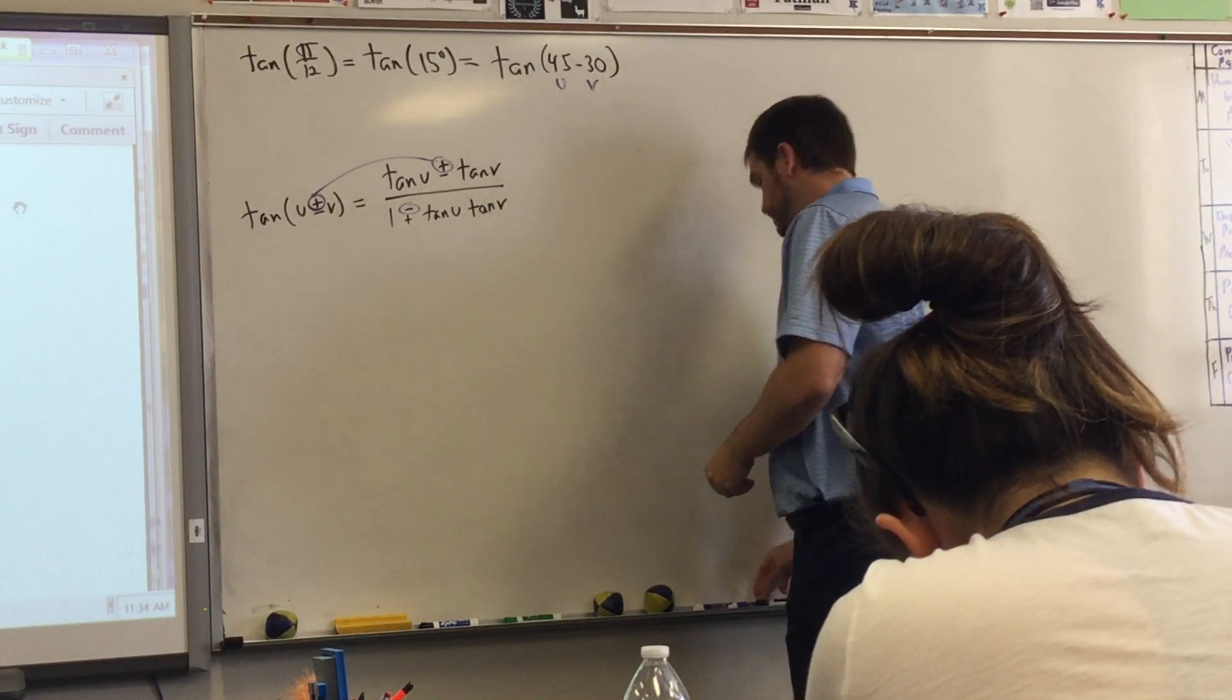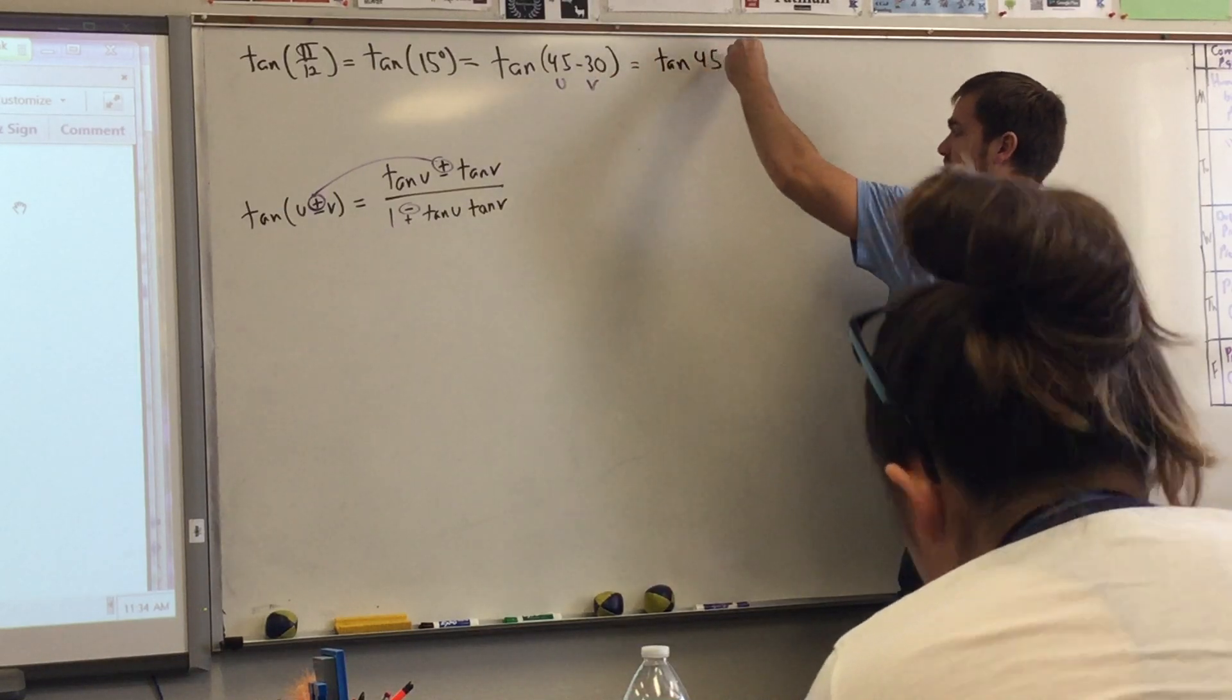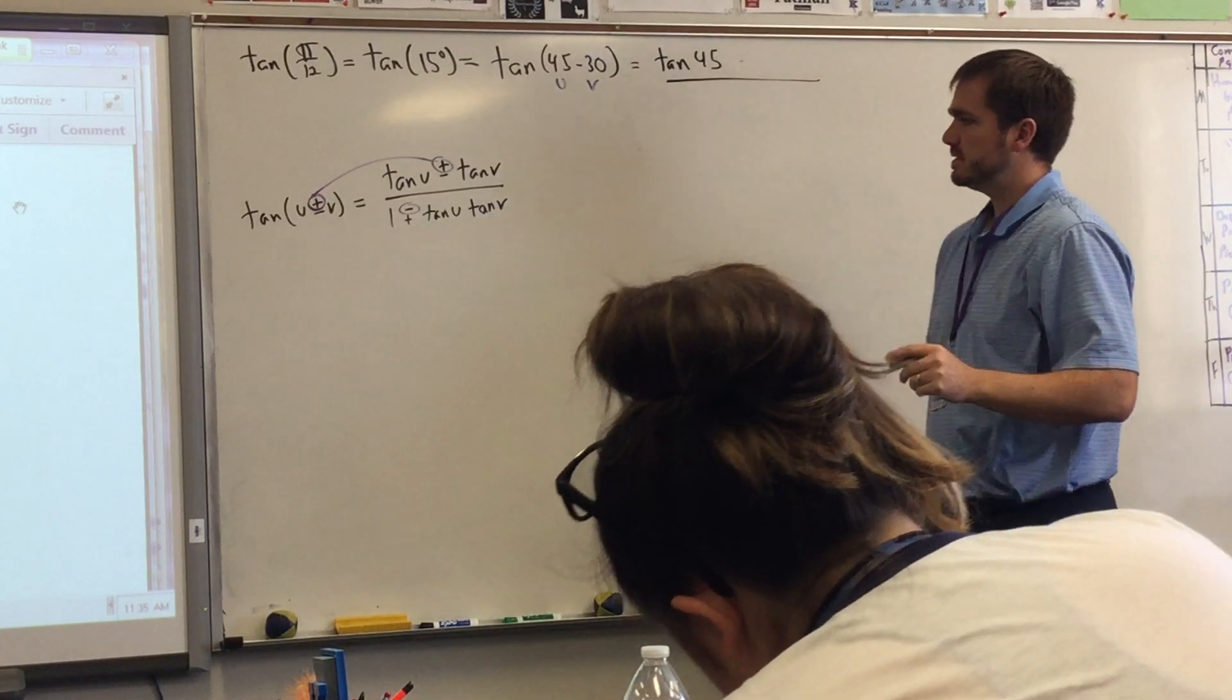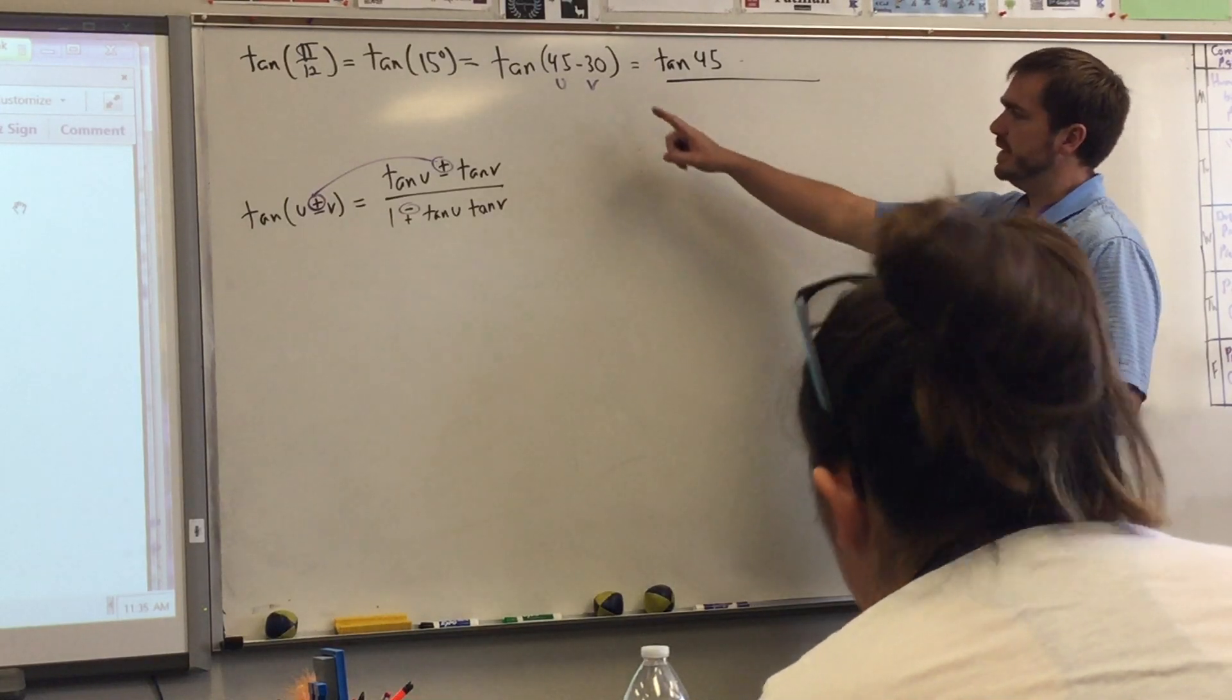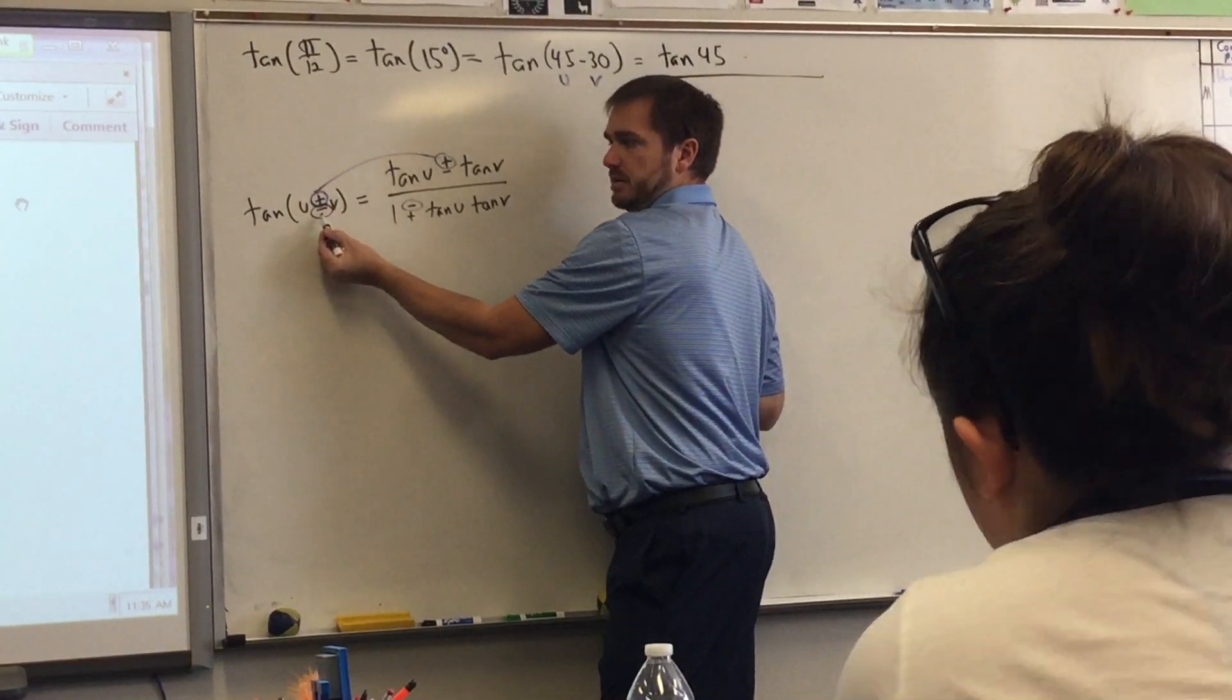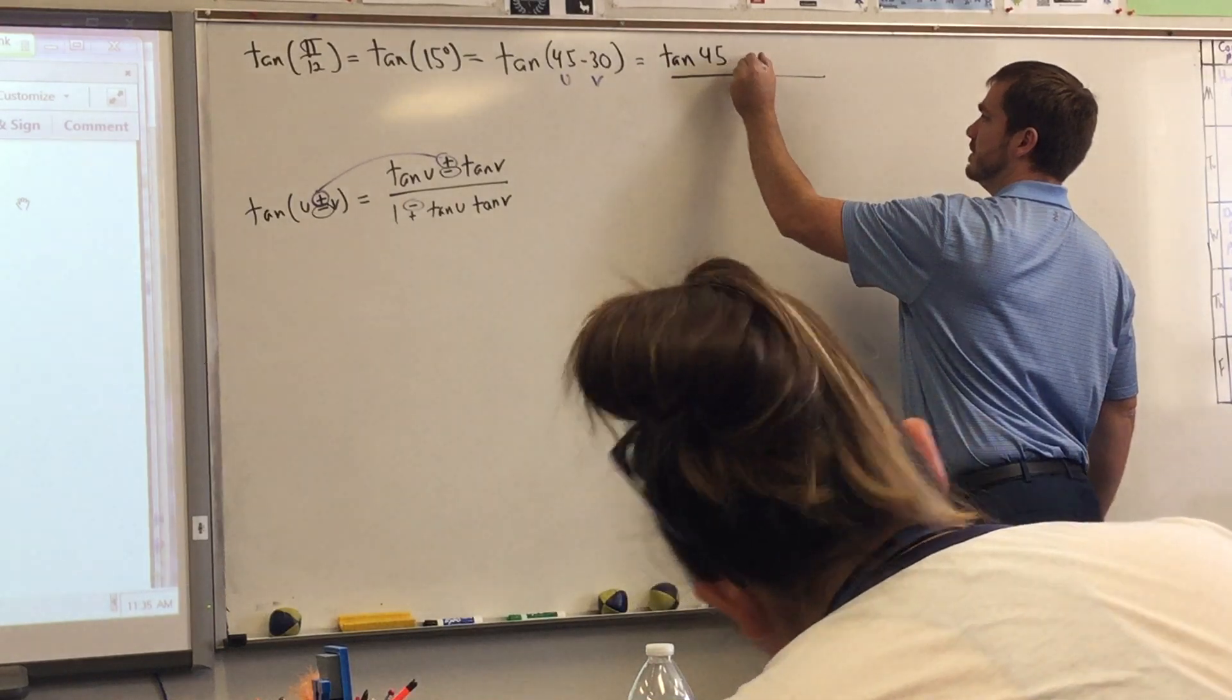Tangent u plus or minus tangent v over 1 minus or plus tangent u tangent v. That's not a typo folks, she said it completely correct. Notice that minus over plus. What that tells me is that if I have a plus which is in the top position then I'm also going to be utilizing the plus which is in the top position and I'm going to be using the minus in the denominator because that's also in the top position. If I had a minus then it would be the other situation.